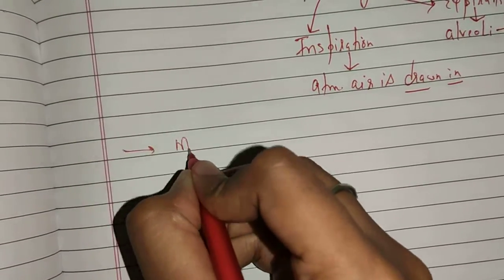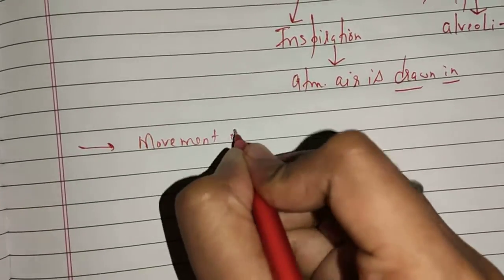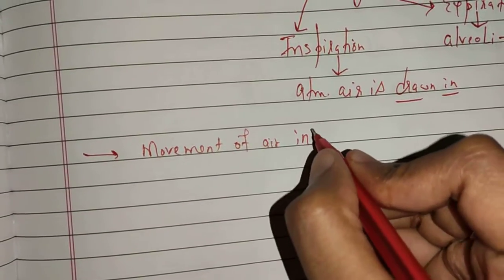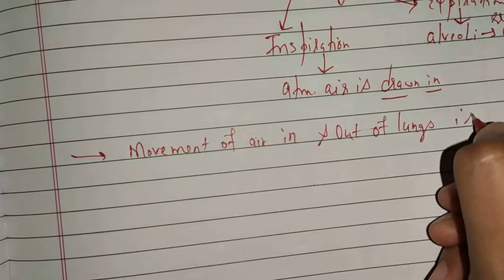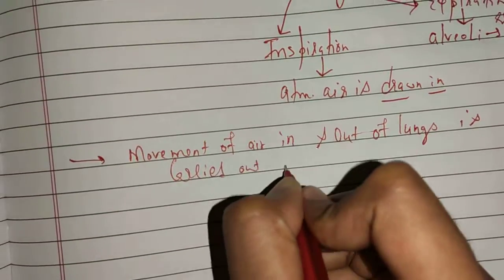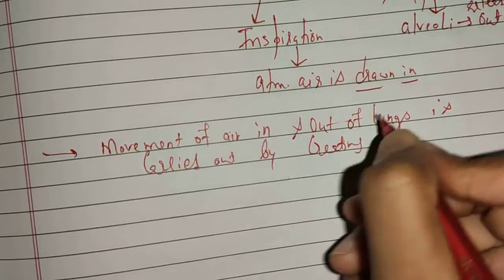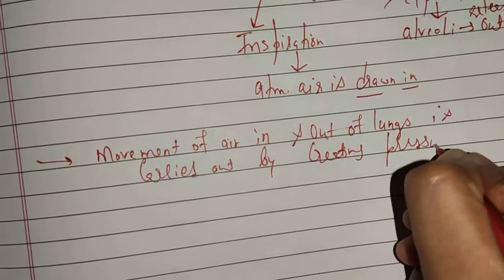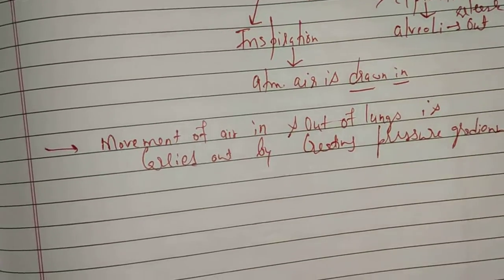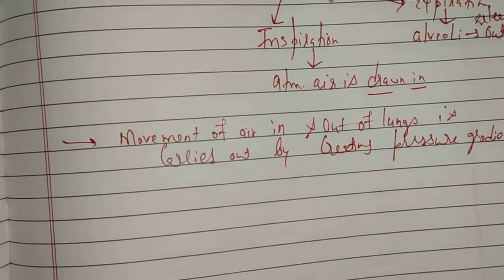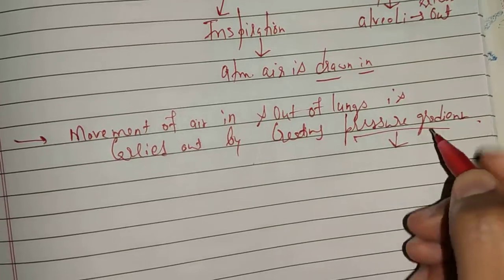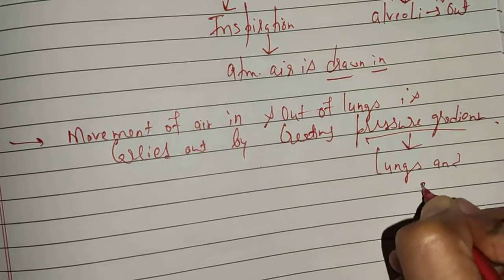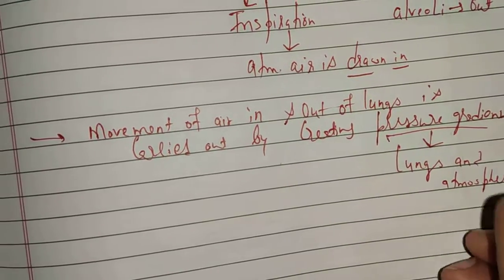The movement of air in and out of lungs is carried out by creating a pressure gradient. A pressure gradient is created so that air enters and exits the body, specifically the lungs. This pressure gradient develops between the lungs and the atmosphere.